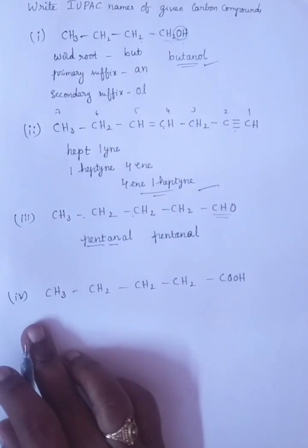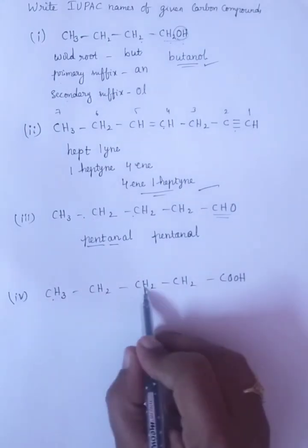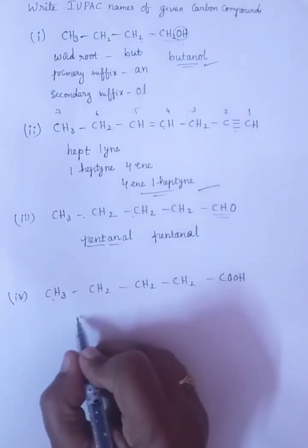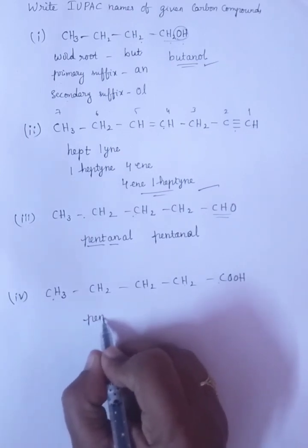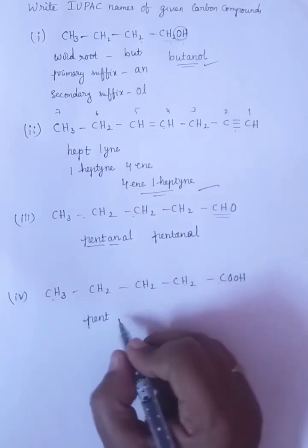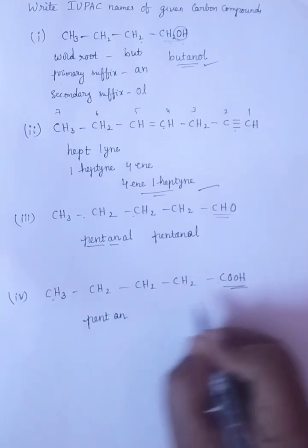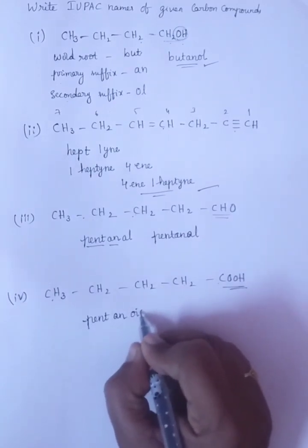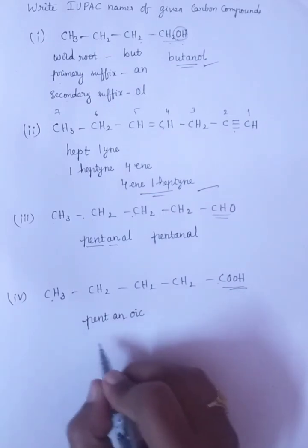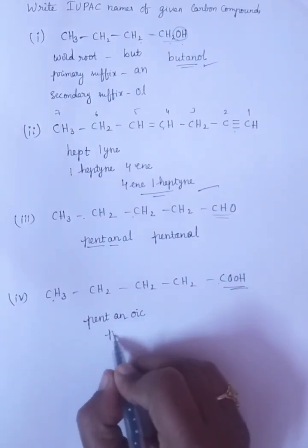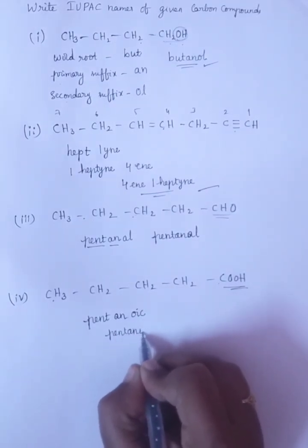Next one. 1, 2, 3, 4, 5. Five carbons is there, so that's why PENT. All single bonds. And this functional group is OIC acid. OIC we have to write. So that's why the name will be PENT and OIC. In this way, we will try to write the IUPAC names. Hope you understand.